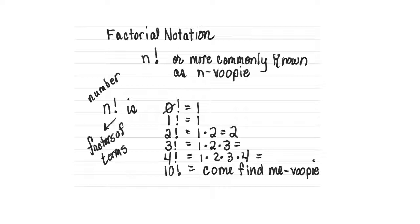Using our handy dandy analyzation skills, we can see that basically a factorial is just the number of terms being factored together.